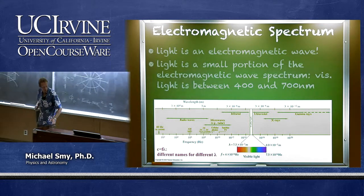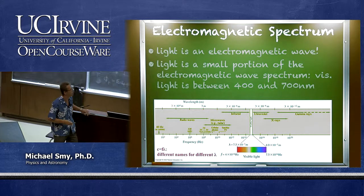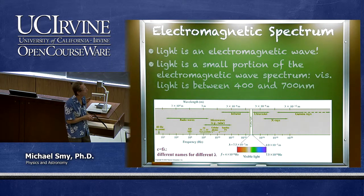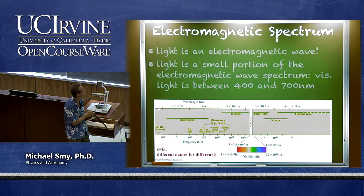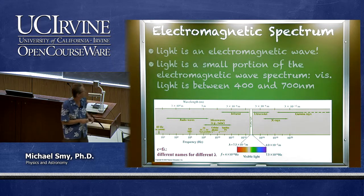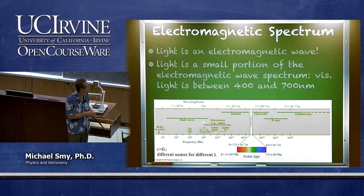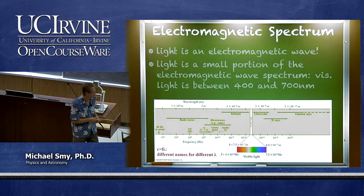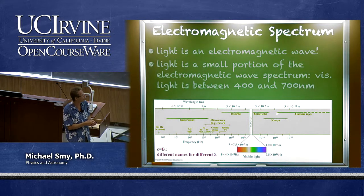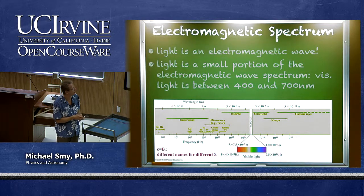Light is actually a very small portion of the electromagnetic spectrum. The entire range from radio waves to gamma rays spans an enormous range of frequencies and wavelengths on a logarithmic scale. Visible light occupies only a tiny portion between about 400 and 700 nanometers. The spectrum includes, from longest to shortest wavelength: radio waves, microwaves, infrared radiation, the visible spectrum, ultraviolet radiation, x-rays, and gamma rays.